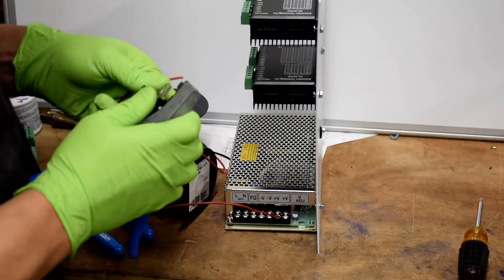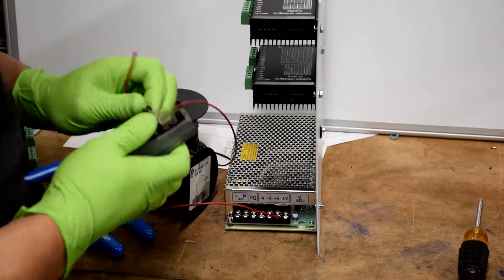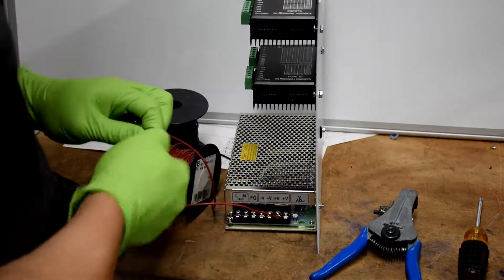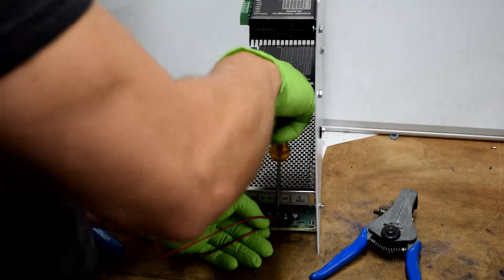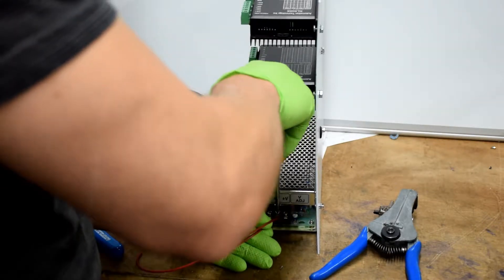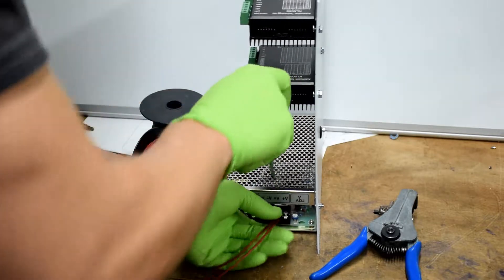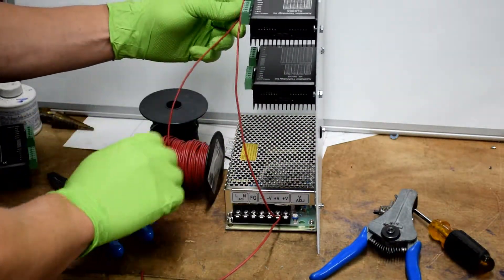You're going to repeat this for the other driver. Same thing, strip off the wire, insert it into the positive terminal on the power supply. I run both these wires into the same terminal. There's four terminals, two for each, positive and negative, and we'll need the other one later.